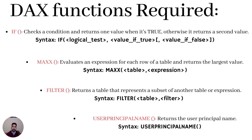The next DAX function we need is MAXX. The MAXX function evaluates an expression for each row of a table and returns the largest value. You can see its syntax — you need a table and then an expression to evaluate. Another DAX function we're going to use is FILTER, which returns a table that represents a subset of another table or expression. You can see its syntax as well.